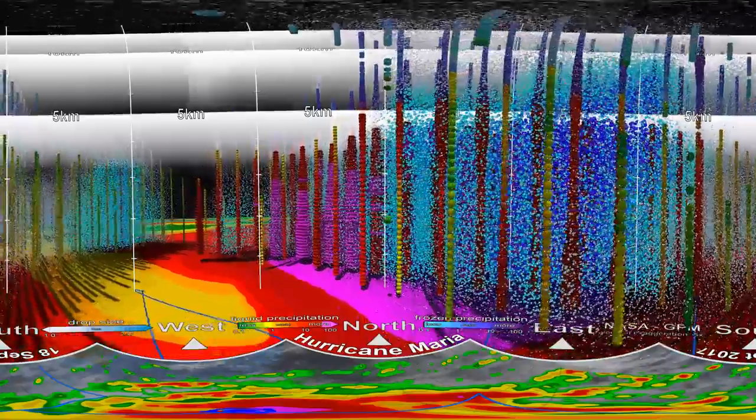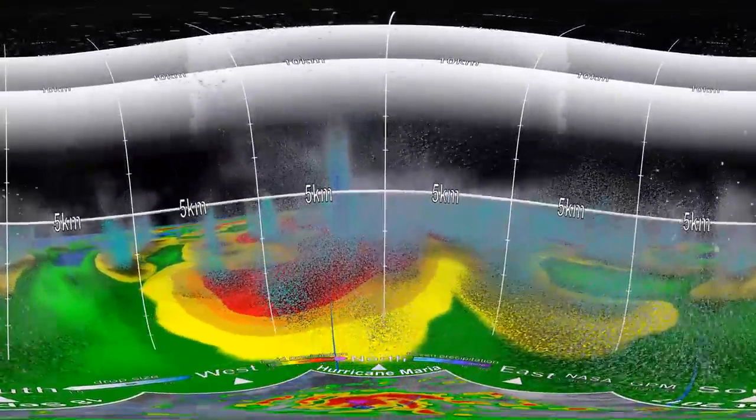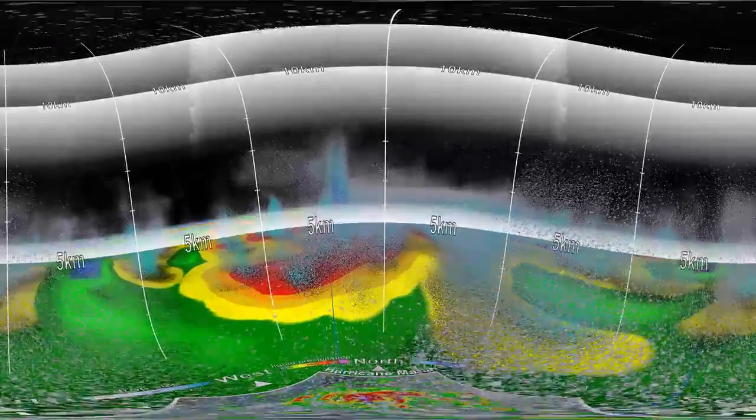Looking at drop sizes and rainfall rates provides a key part of the equation in understanding hurricane intensity. Factors such as temperature, humidity, wind speed and clouds influence the size of the precipitation particles, which in turn affects how much rain falls and how a storm grows.